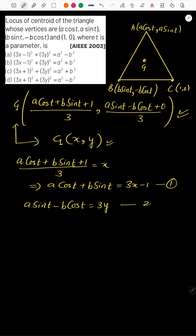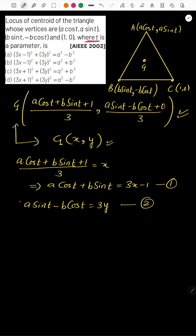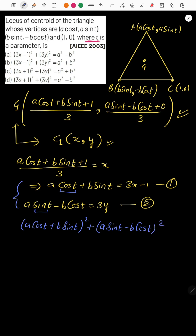To find the locus equation, we need to remove the parameter t. We apply algebra to eliminate t. Since we have a cos t and a sin t, we can use cos²t + sin²t = 1. For this, we square both equations and add them. Squaring equation 1: (a cos t + b sin t)² = (3x - 1)². Squaring equation 2: (a sin t - b cos t)² = (3y)².